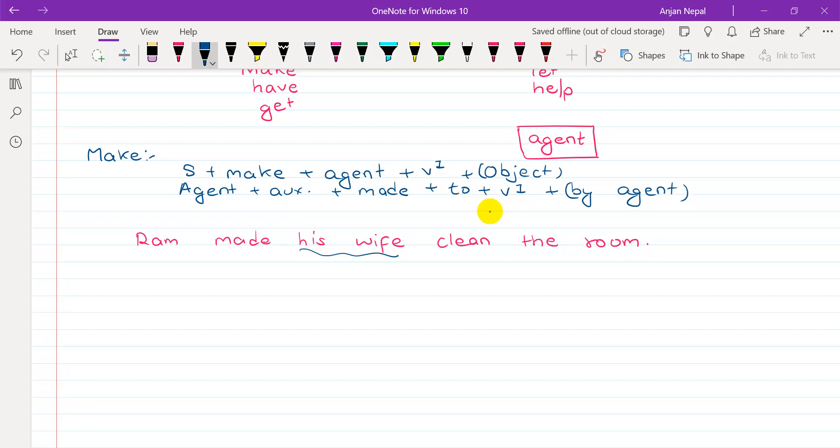For example, I was made to dance by my parents. The flame made us cry. So this is what we need to know. We need to know the sentence, we need to know the verb.